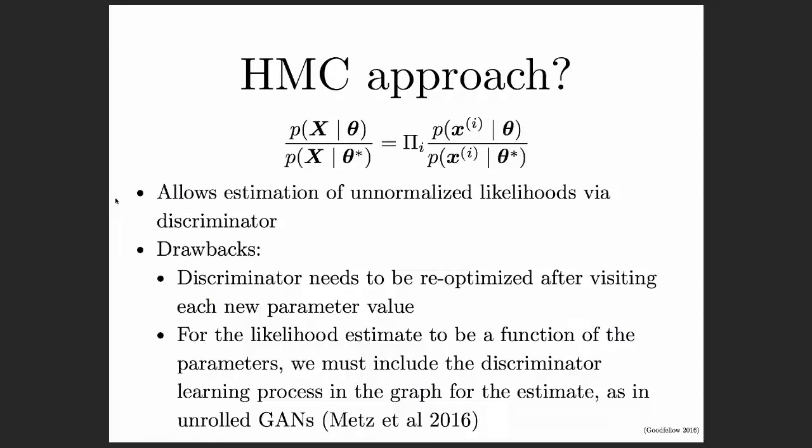There are a few drawbacks to this approach. One is that we would need to re-optimize the discriminator every time we visit a new θ value. Another is that the trivial version of computing these ratios using a fixed discriminator will not give us derivatives with respect to the parameters θ of the underlying model. What we could do instead is build a computational graph describing the learning process of the discriminator, as is done in the recent unrolled GANs paper. When we backpropagate through that learning process, we could actually get gradients through the learning process itself with respect to θ — potentially enabling Hamiltonian Monte Carlo over the space of parameters to sample from the posterior in a very flexible way.